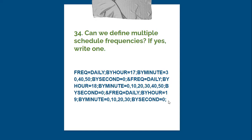For example, the first frequency triggers every day at hour 17 (5 PM), by minute 30, 40, 50 — so at 5:30 PM, 5:40 PM, and 5:50 PM it triggers three times. The next schedule is at 6 PM, every 10 minutes, so it triggers six times total. Then at hour 19 (7 PM) it triggers four more times.